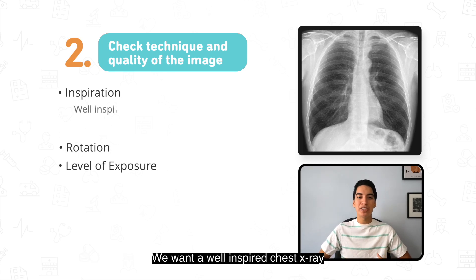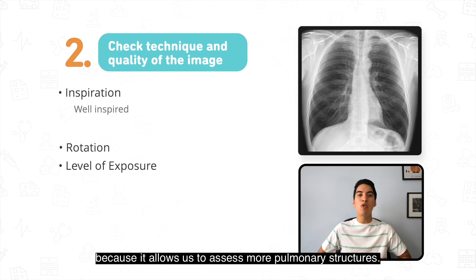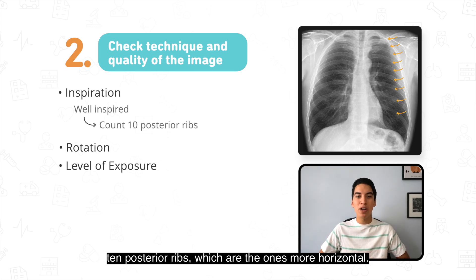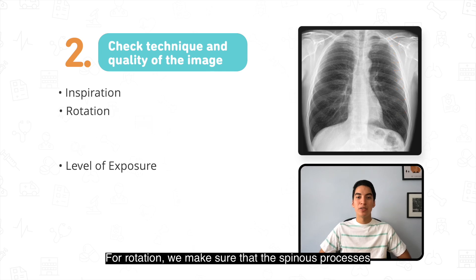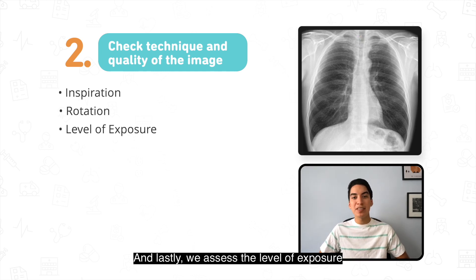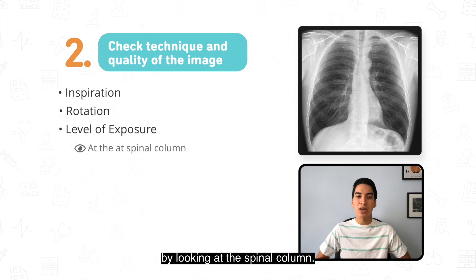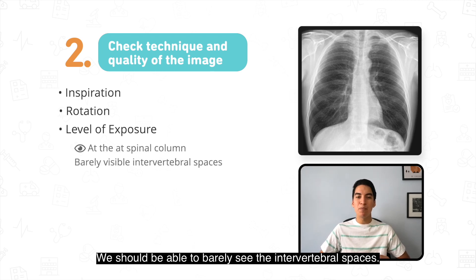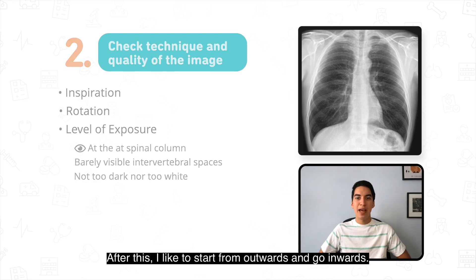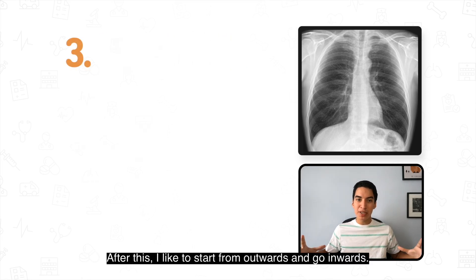We want a well-inspired chest x-ray because it allows us to assess more pulmonary structures. In a properly inspired chest x-ray we will be able to count 10 posterior ribs, which are the ones more horizontal. For rotation, we make sure that the spinous processes are equidistant from the border of the clavicles. Lastly, we assess the level of exposure by looking at the spinal column, where we should be able to barely see the intervertebral spaces. In summary, we want an x-ray that is not too dark nor too white.